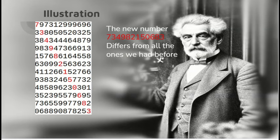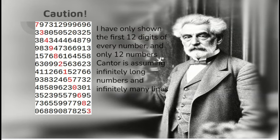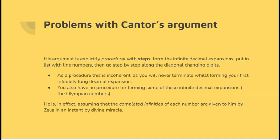Now, that seems a fair enough thing. I've only shown the first twelve digits of every number and twelve rows. And Cantor's assuming infinitely long numbers with infinitely many rows. But the argument seems valid. What's wrong with it?